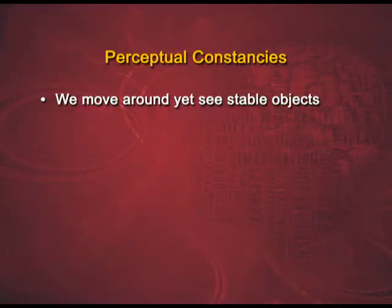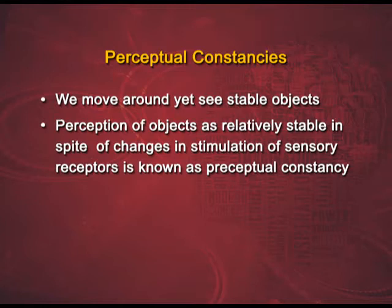Isn't it interesting to know these principles? Isn't it intriguing to see that we are blessed with these unique capabilities of perceiving things and objects as wholes rather than discrete elements? Apart from these principles, there are also certain other concepts we need to know. We are in movement all day long, yet we see things as stable objects. Even if I move within the classroom, your face will form different angles at my retina. Despite this retinal image varying, I will be able to see your face as a single entity from all places and angles. Perception of objects as relatively stable in spite of changes in stimulation of sensory receptors is known as perceptual constancy. There are three major principles to help you understand it.